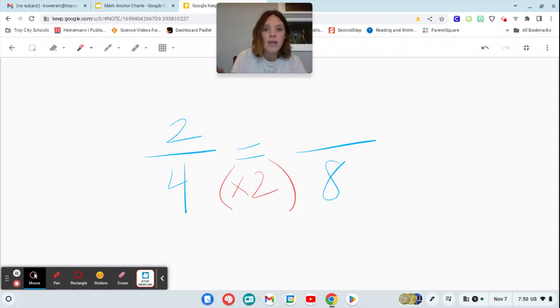So in order to make this an equivalent fraction, the same rule has to apply to the numerator. So we'll say 2 times 2 is 4. So 2 4ths and 4 8ths are equivalent fractions.